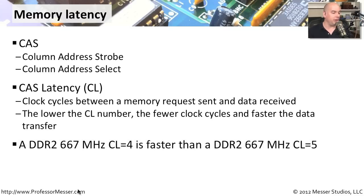For example, if you had DDR2 memory rated at 667 megahertz speed with a CL4, that's going to be faster than the same speed memory with a CL5. The lower the latency, the faster the amount of data transferred.